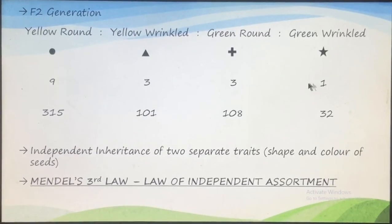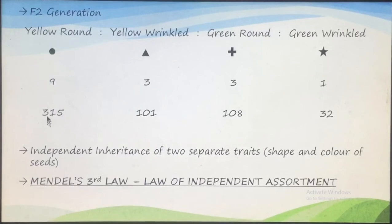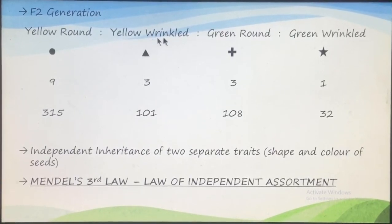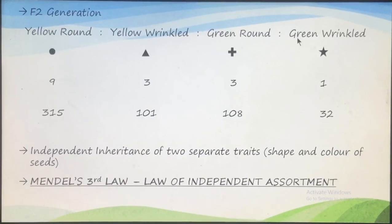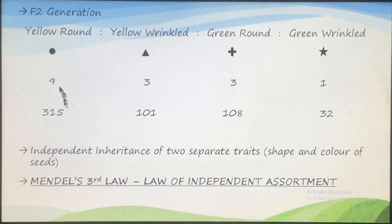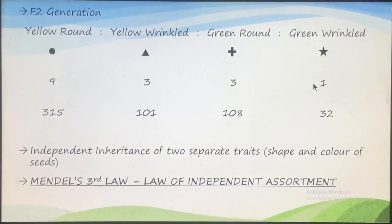When Mendel actually performed the experiment, in total he found: 315 plants had yellow color and round seeds, 101 had yellow and wrinkled seeds, 108 had green and round seeds, and 32 had green and wrinkled seeds. If you calculate the ratio of these numbers, it comes to 9:3:3:1.